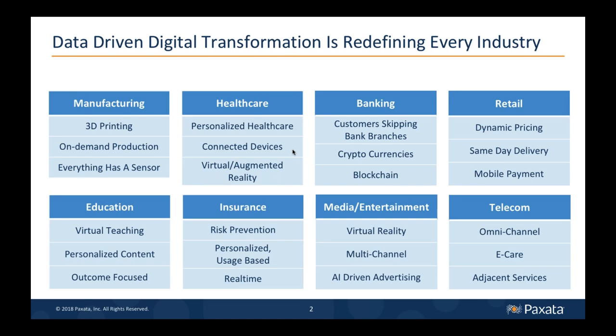This slide covers all industries. You can see there are all these different kinds of initiatives and transformations taking place in organizations. Data is at the heart of all of these things — whether it's manufacturing doing on-demand production and leveraging data flowing from sensors on products and manufacturing lines, or healthcare with connected devices, virtual or augmented reality, or insurance with personalized or usage-based models. Data is at the heart of this revolution across all of our businesses.